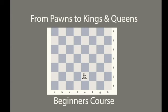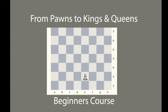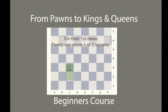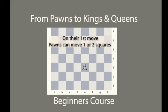A pawn can move one square at a time or two squares at a time. If a pawn chooses to move one square or two squares at the beginning of the game, they can never move two squares again. Once they make that choice at the beginning of the game, they are never allowed to move two squares again during the game.